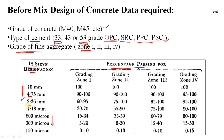Percentage passing means: suppose in your 2.36 mm tray there remains 5 kg and you started with a total of 10 kg. The cumulative retained up to 2.36 mm is 5 kg plus 0 plus 0, so total retained is 5 kg. The passing sand is 10 minus 5, which is 5 kg. In percentage: 5 divided by 10 multiplied by 100 equals 50%. Like that, for each sieve you calculate this percentage passing.